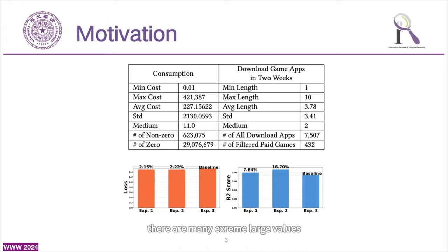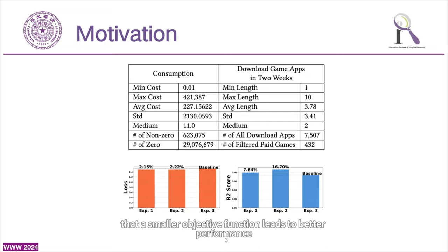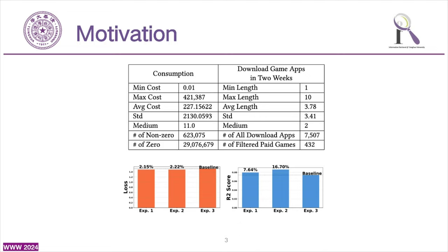Besides, there are many extreme large values. When the model is trained with such a dataset, the iron law that we have always believed in — that a smaller objective function leads to better performance — may fail, which you can refer to in the figure.